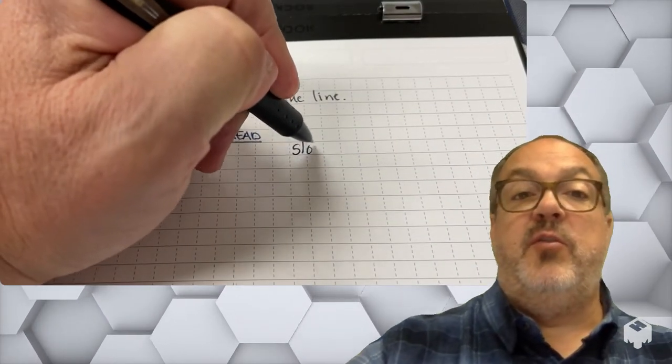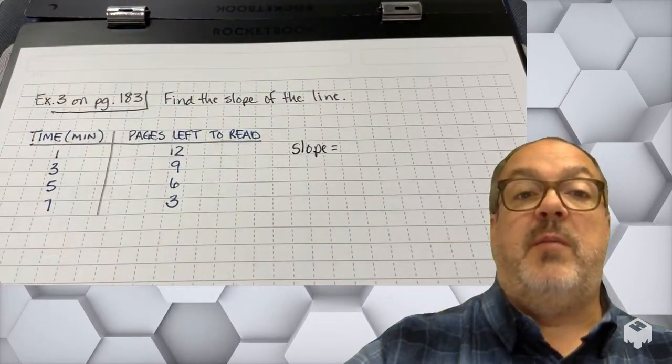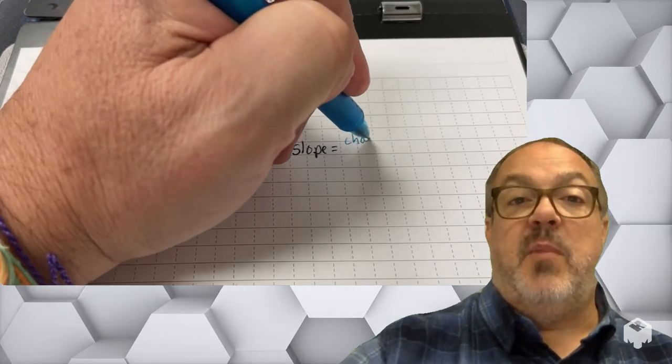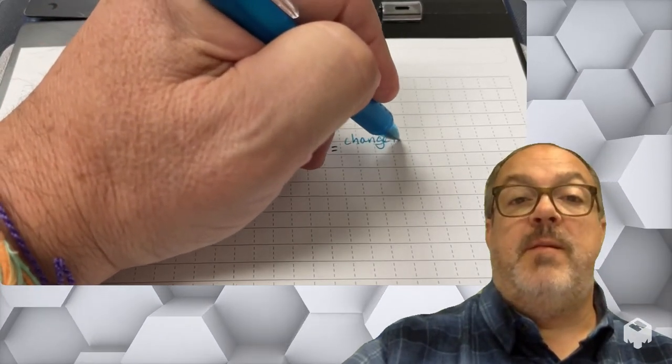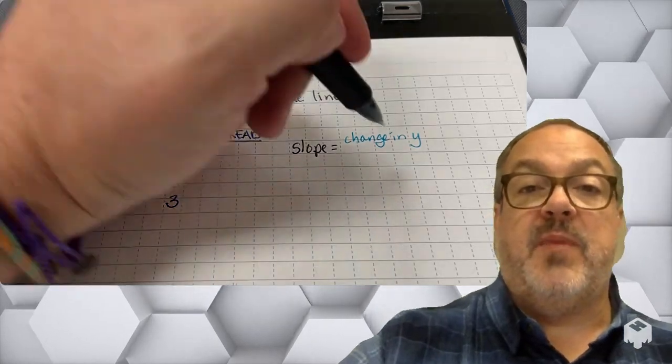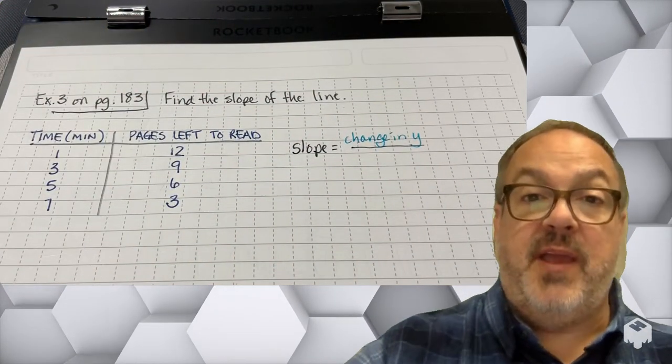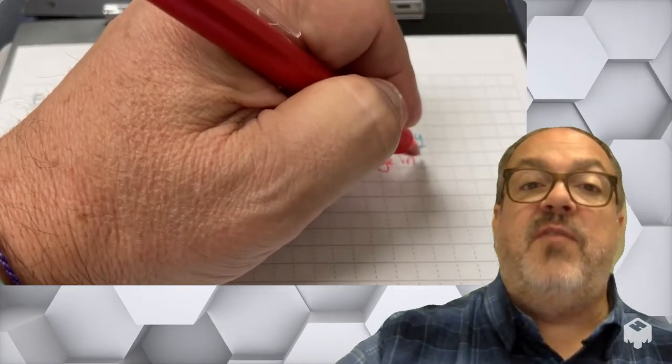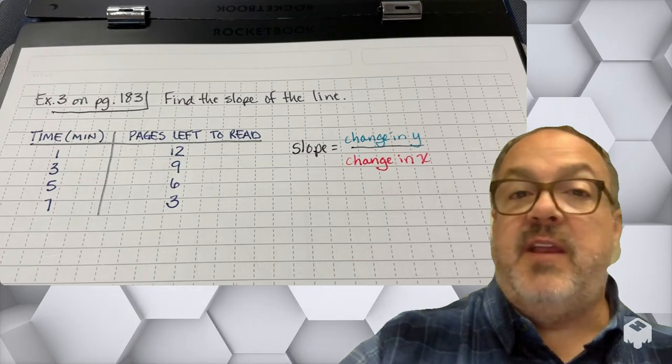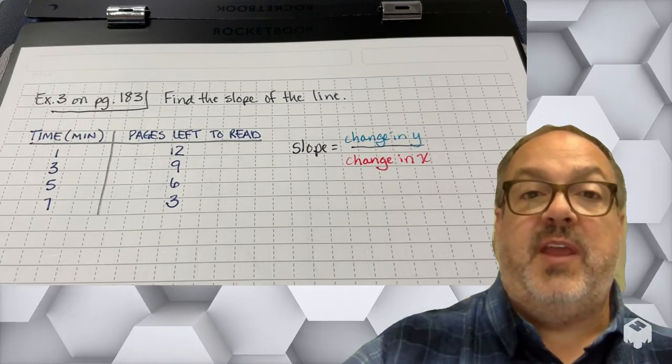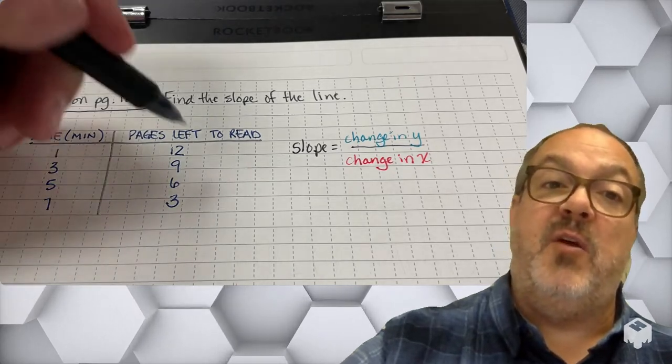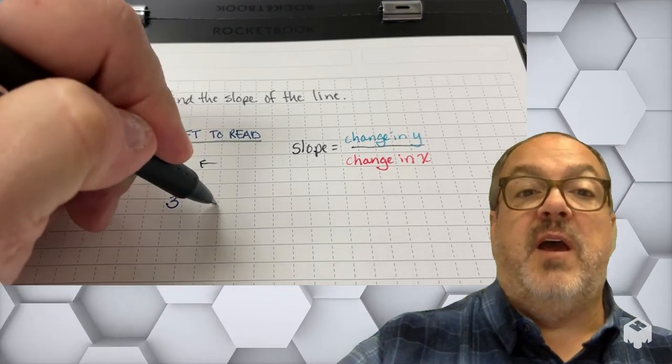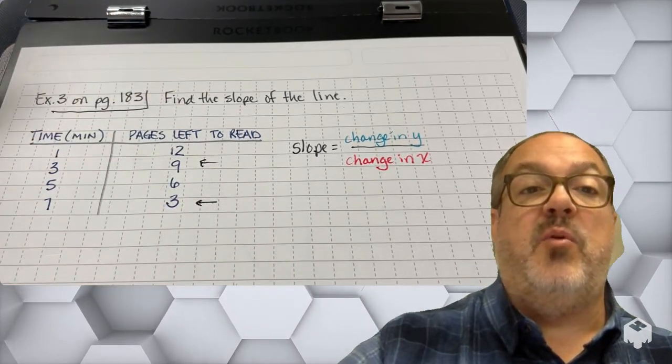I can use a table to find the slope. So what I'm looking for is the change in my y value, and I'm going to divide that by the change in my x value. And if this truly is a line, I can pick any points in this table to find what my slope is. So I'm going to choose the point (3,9) and the point (7,3).